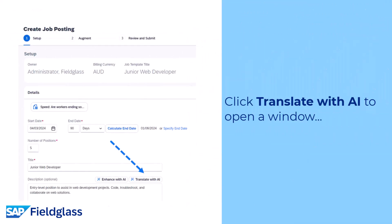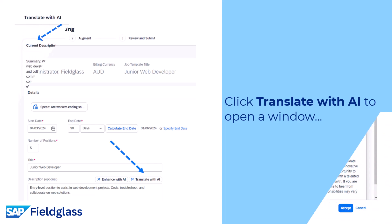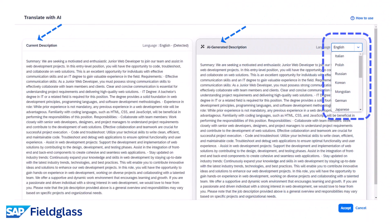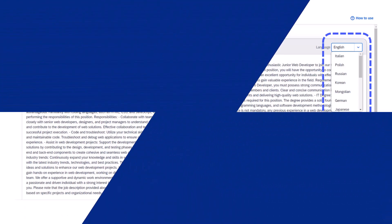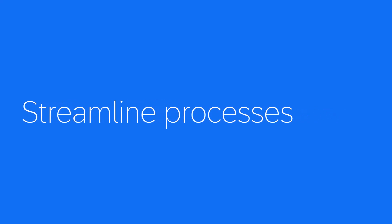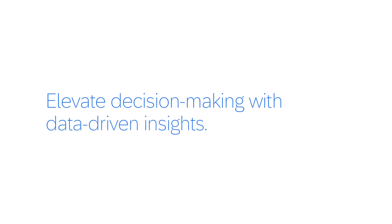To translate a job description, just click 'Translate with AI' to open a window that shows the current description and an AI-generated description. Select a translation language from the list of languages enabled for the tenant. This update will boost productivity, streamline processes, and elevate decision making with data-driven insights.